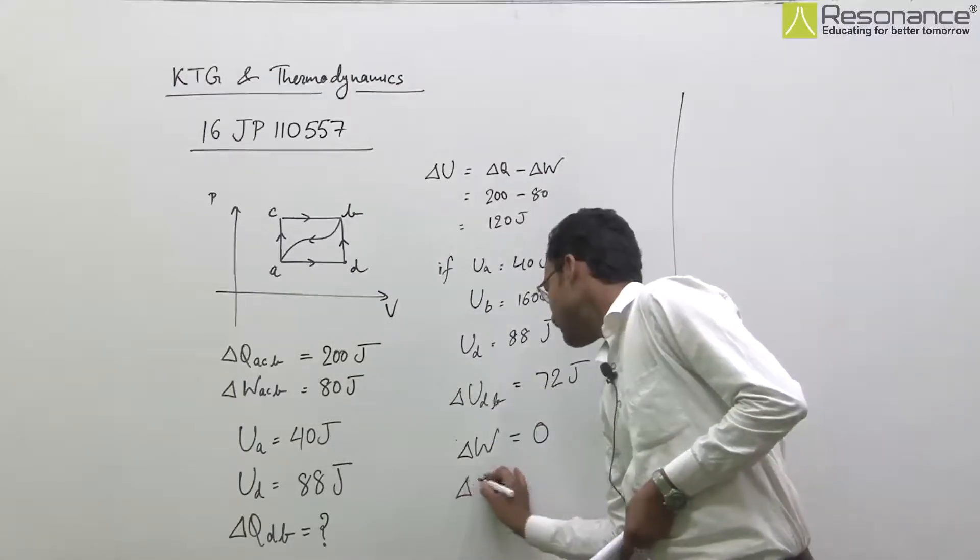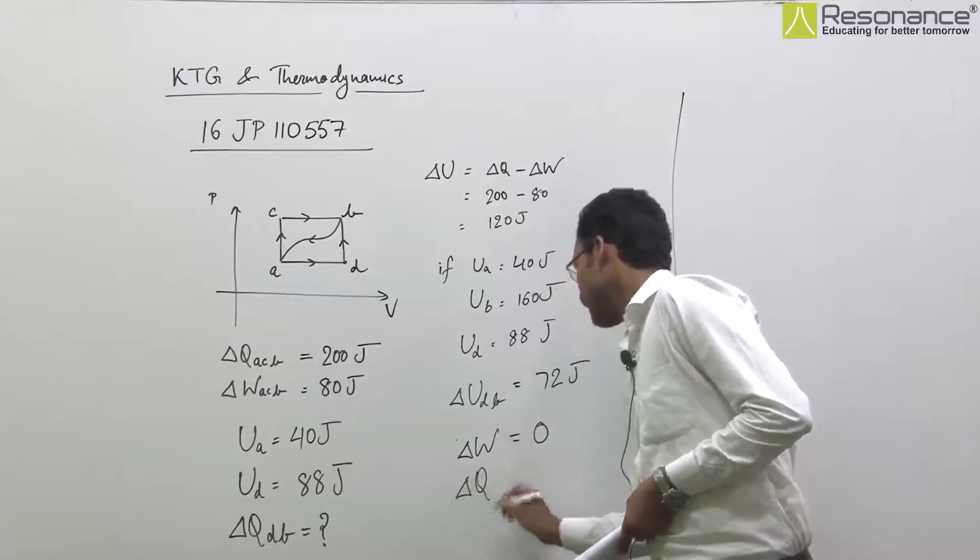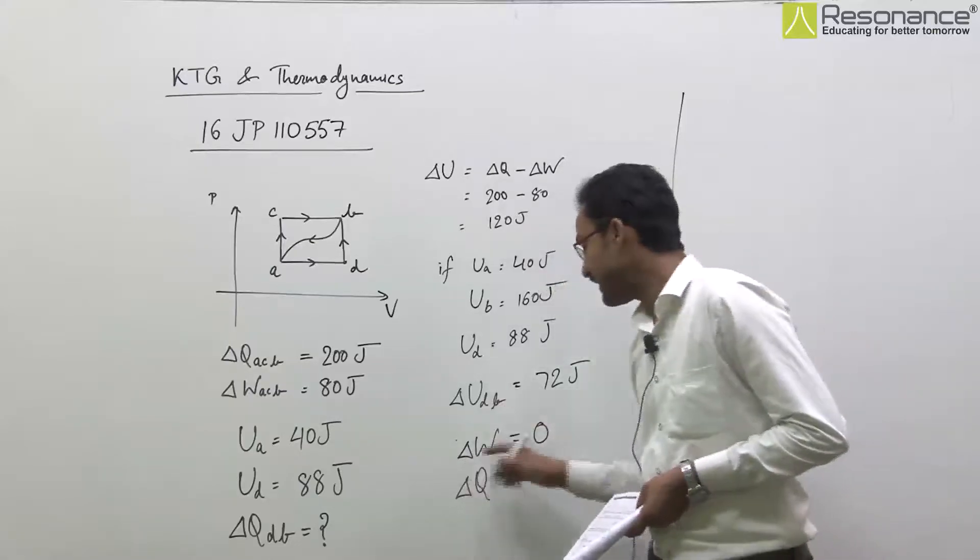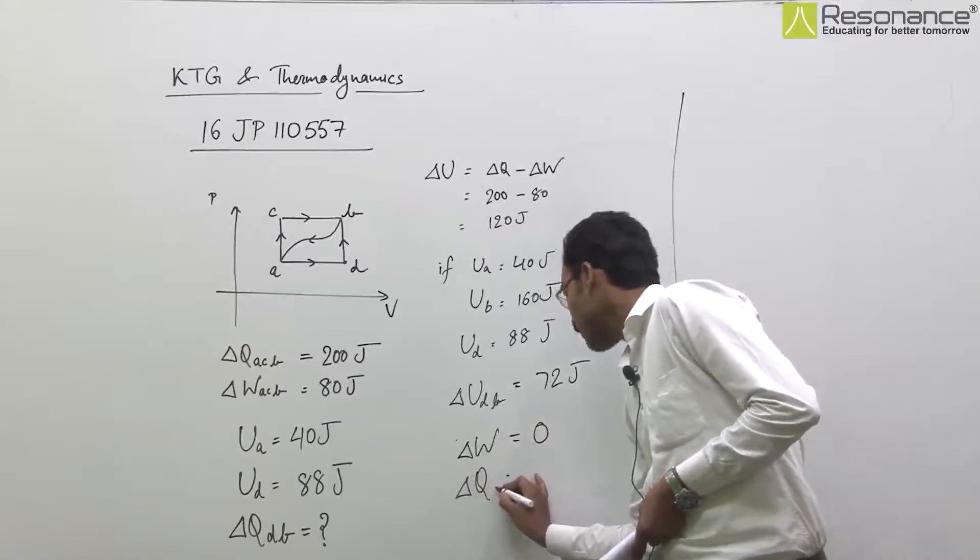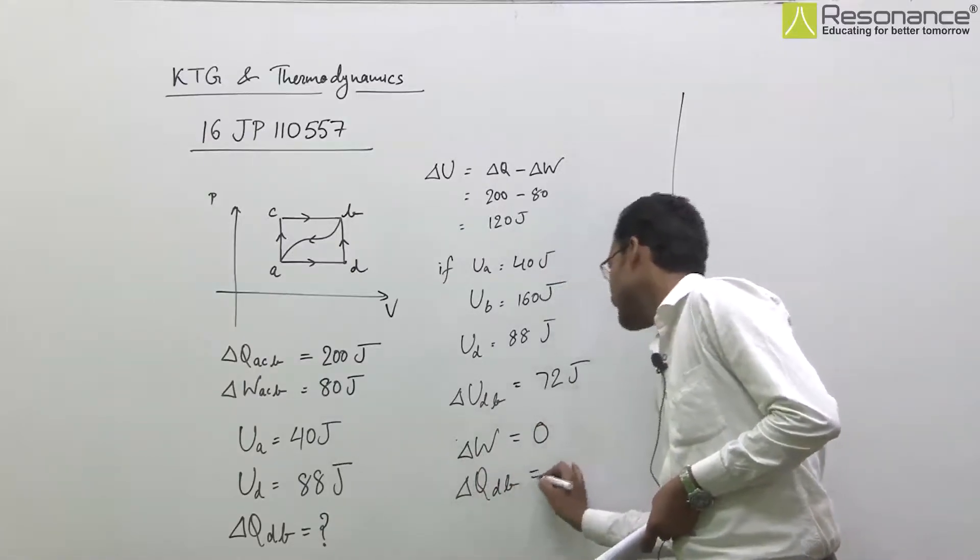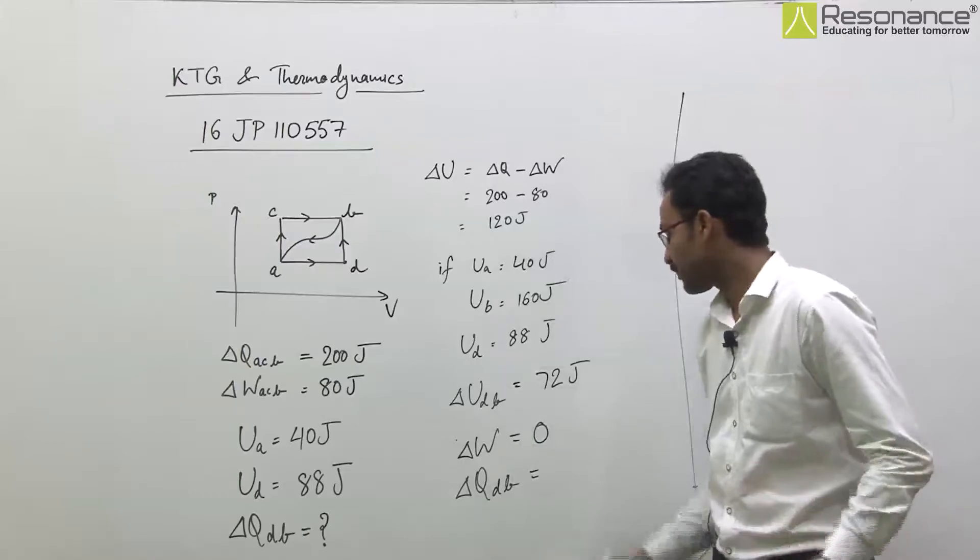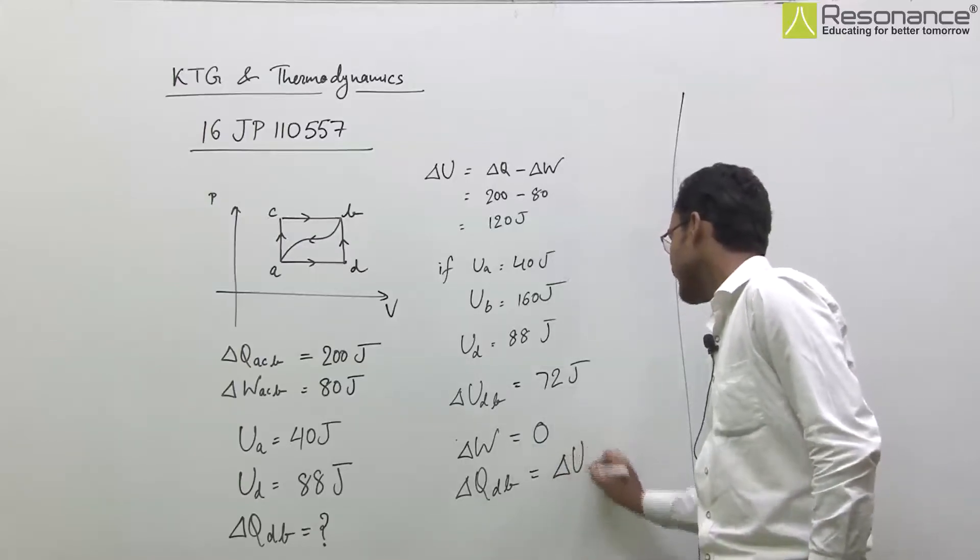This implies total heat absorbed by the gas for the process D to B is equal to total change in internal energy